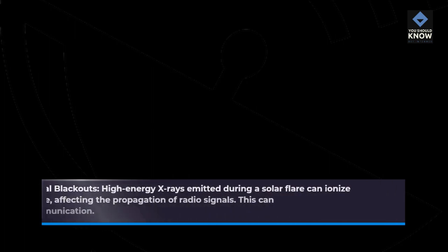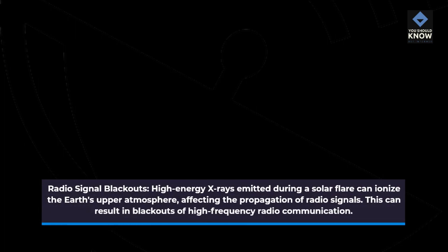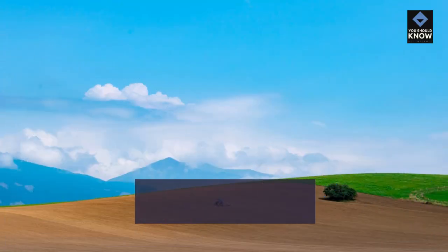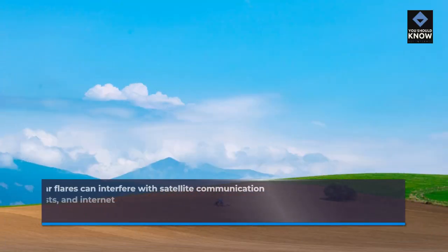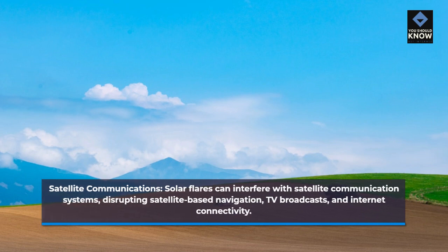Radio signal blackouts are another impact: high-energy X-rays emitted during a solar flare can ionize the Earth's upper atmosphere, affecting the propagation of radio signals. This can result in blackouts of high-frequency radio communication. Solar flares can also interfere with satellite communication systems, disrupting satellite-based navigation, TV broadcasts, and internet connectivity.